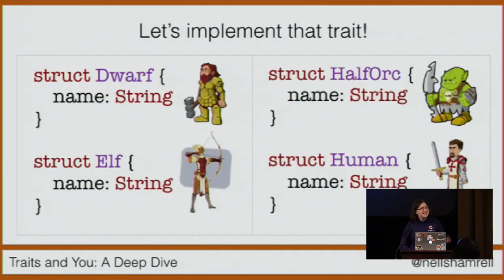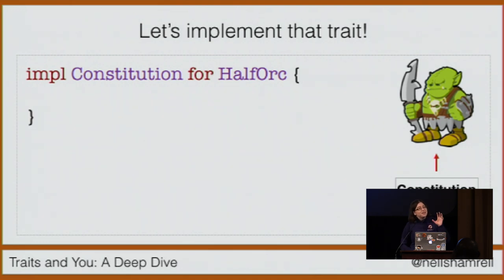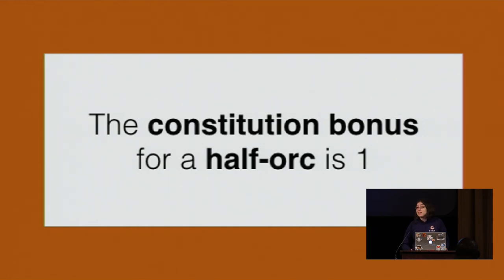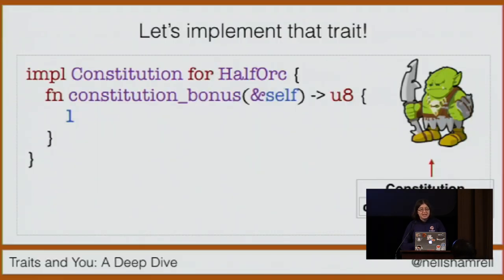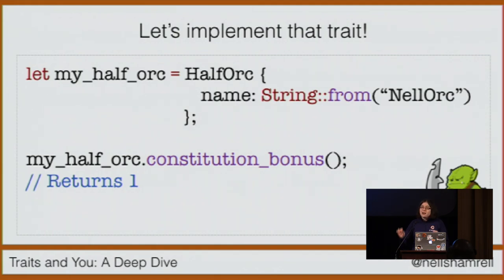That covers one of our structs. Let's take a look at one that might have a different constitution bonus: the half-orc. When I want to add a constitution to the half-orc struct, I first implement it, then define the constitution_bonus for that struct — which is different from a dwarf's. The constitution bonus for a half-orc is one. Any time you need to score a certain constitution on a dice roll, you can add one if your character is a half-orc. So when I create a half-orc called NelOrc and call constitution_bonus on it, it returns 1.